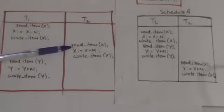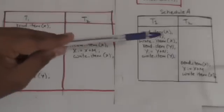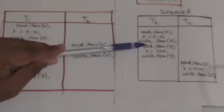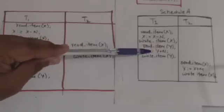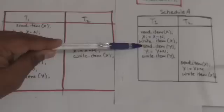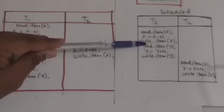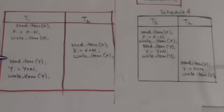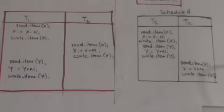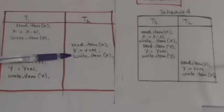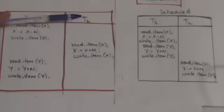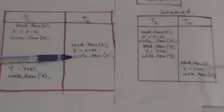Here also, transaction T2 reads the value of X which is written by transaction T1. In this schedule, transaction T1 reads the value of Y which was in the database before the schedule started — the original value of Y. In this schedule also, transaction T1 reads the value of Y which was in the database before the schedule started.